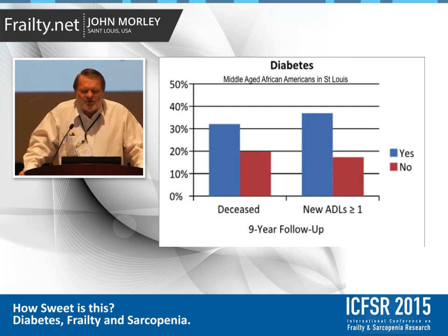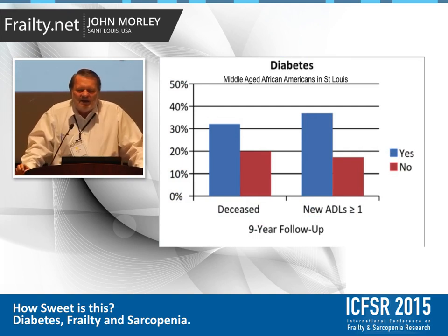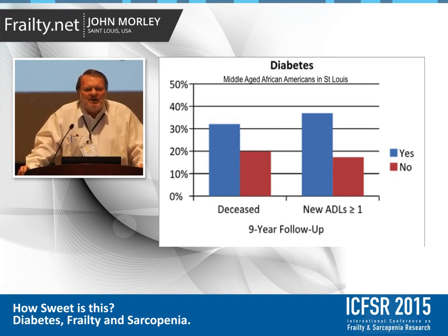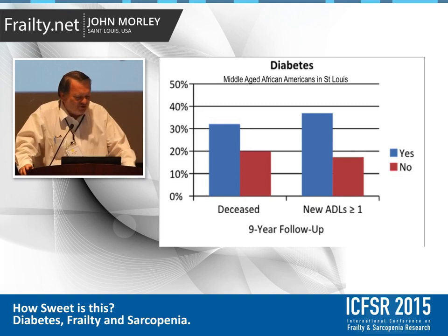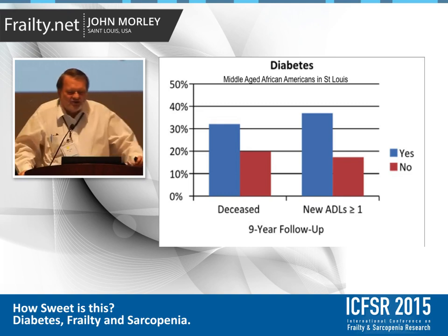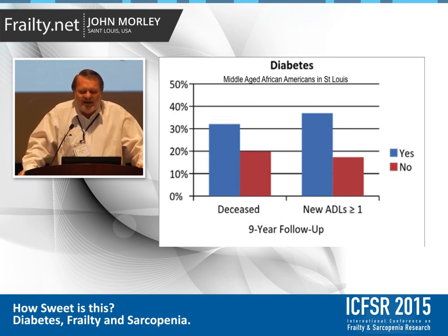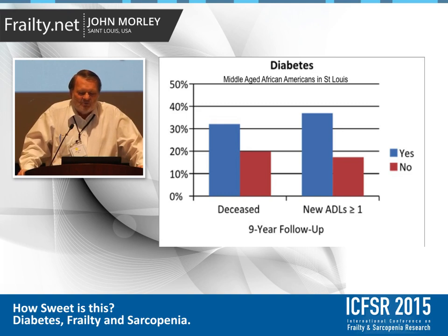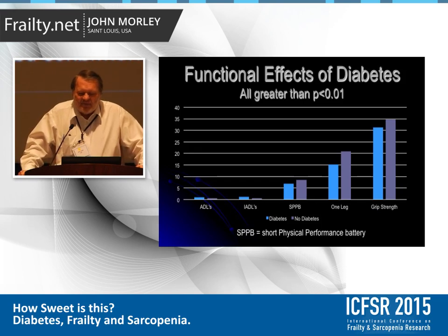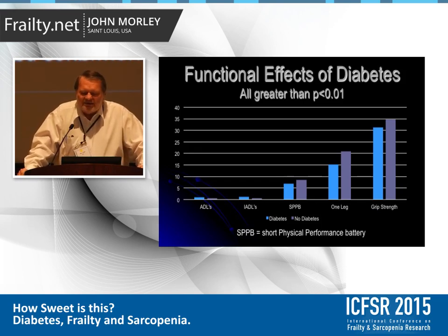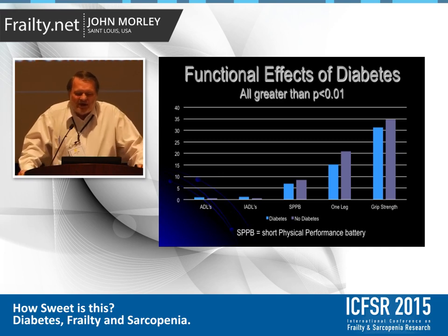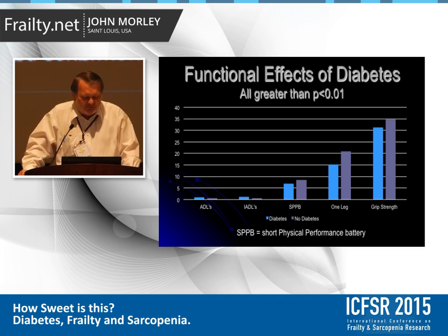Starting with data from an African American study of middle-aged participants in St. Louis with Doug Miller and Ted Milstrom: if you are a middle-aged African American diabetic, you're more likely to die over a nine-year follow-up, more likely to develop disability. Functionally, you're more likely to have poor activities of daily living, poor IADLs, a worse SPPB performance, poor one-leg stand, and poor grip strength. So diabetics develop early disability.